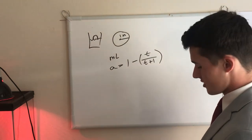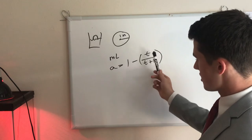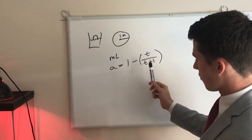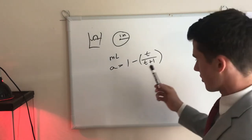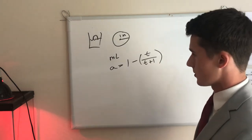So after one second, if you imagine, here's a one, and then here's a two, so this would be one plus one, right? And so you'd have one minus one over two, which would equal one half.